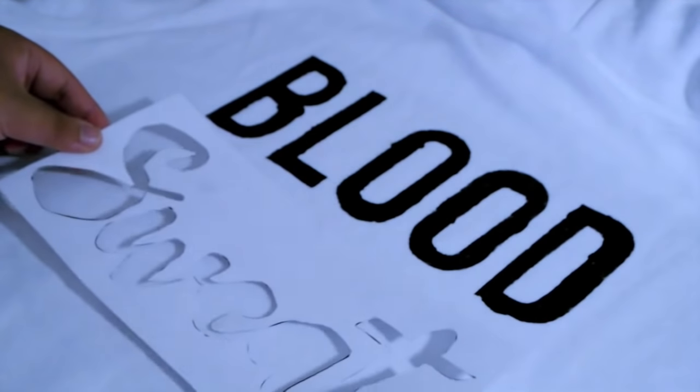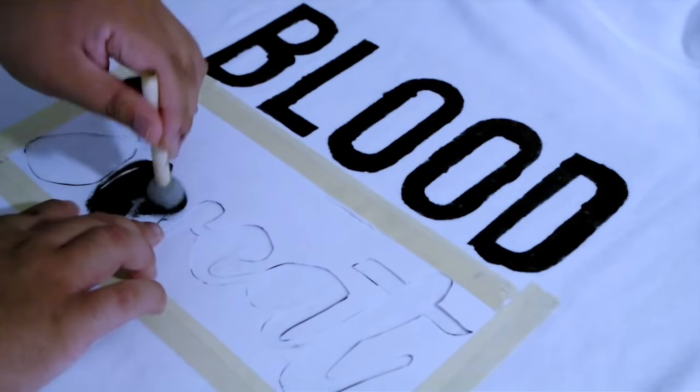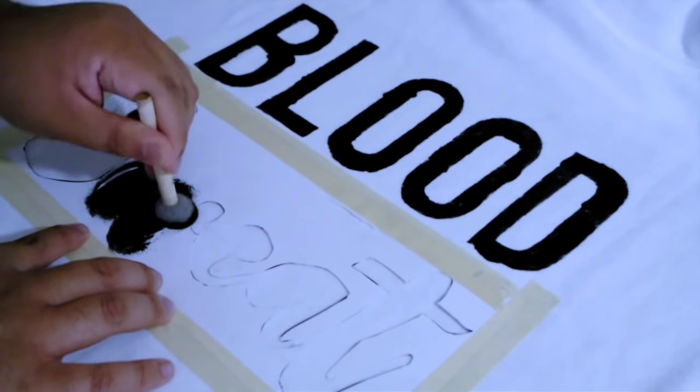And I cut them out and then I used an X-Acto knife to cut out the letters and then went ahead and just used my fabric paint and went over it.